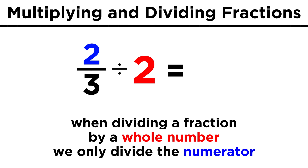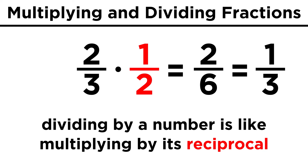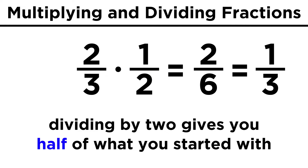Now in terms of division, it's a little trickier. Just like when multiplying a fraction by a whole number, when we divide a fraction by a whole number, we only divide the numerator. So two thirds divided by two is one third. This is because dividing by a number is the same as multiplying by its reciprocal, which is just a fancy word for one over the original thing. That means dividing by two is the same thing as multiplying by one half. This makes sense, since dividing by two gives you half of what you started with.